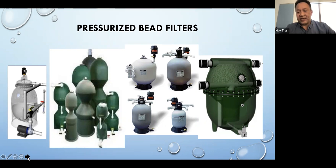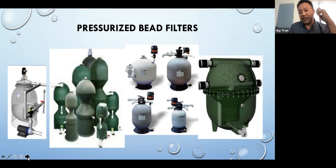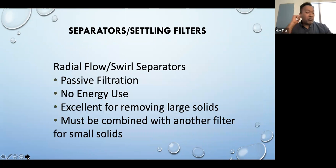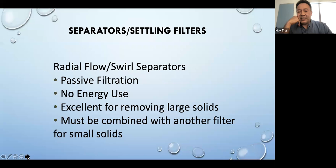The last bead filter on the far right has a drop filter mechanism that induces air into a bottom chamber, and when that air reaches a certain volume it trips a trigger and creates a backwash. Swirl separators and settling filters are very passive but tend to only filter out much larger solids. There's very little or no energy needed to run them — excellent for removing large solids, but usually must be combined with additional mechanical filtration.